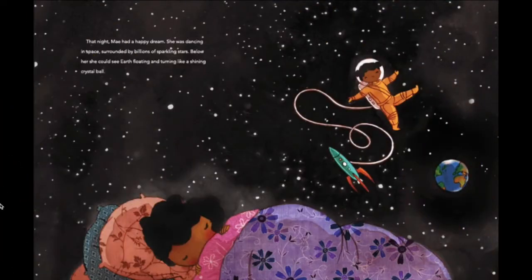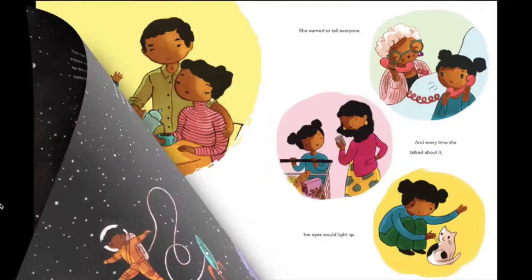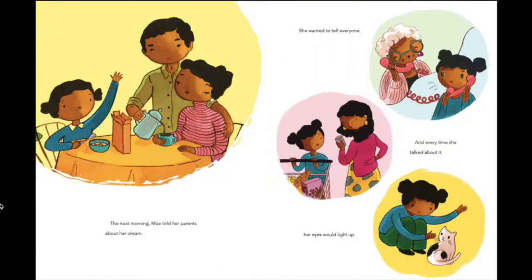That night, May had a happy dream. She was dancing in space, surrounded by billions of sparkling stars. Below her, she could see Earth floating and turning like a shining crystal ball. The next morning, May told her parents about her dream. She wanted to tell everyone, and every time she talked about it, her eyes would light up.